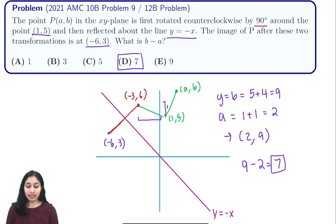What you want to do in this case is maybe work forward so you can look at the point (2,9) and then rotate 90 degrees counterclockwise around the point (1,5), and then reflect and make sure that you end up with (-6,3). So let's try doing this just to verify that our answer is correct. We start off with the point (2,9), and we want to rotate it 90 degrees about the point (1,5), rotating counterclockwise.